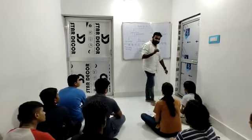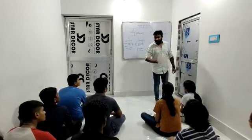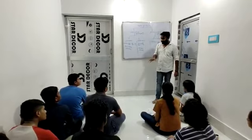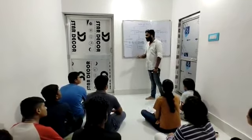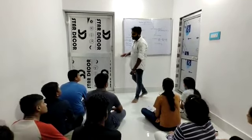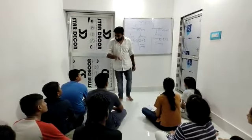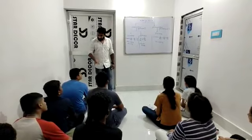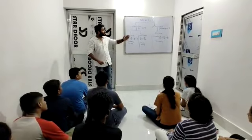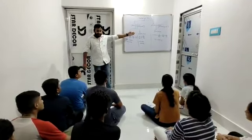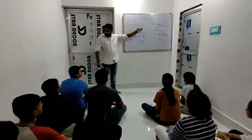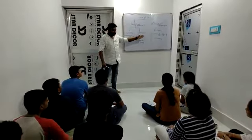Those equations where we can find out the value of X and Y, they are consistent. Those that have no solution, that is inconsistent, and inconsistent means the lines are parallel.